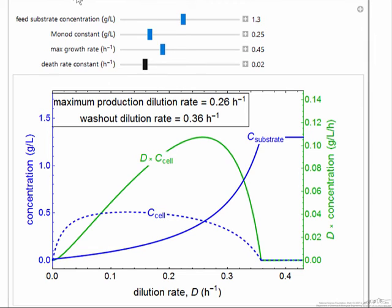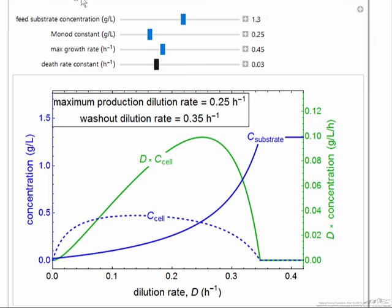Now we have a maximum in the cell concentration as a function of dilution rate. But we have a different location, a different dilution rate that corresponds to the maximum in the rate that we're producing cells—in other words, number of cells coming out of the reactor per reactor volume.